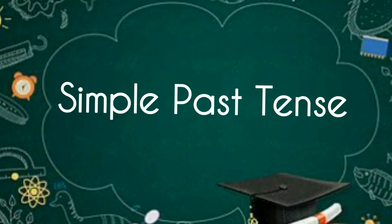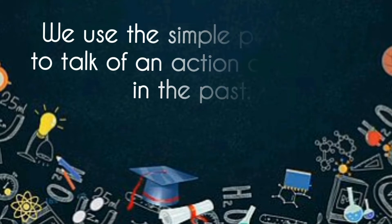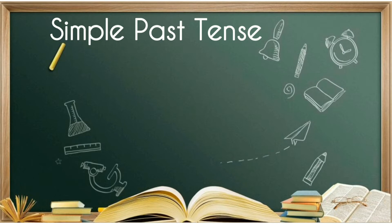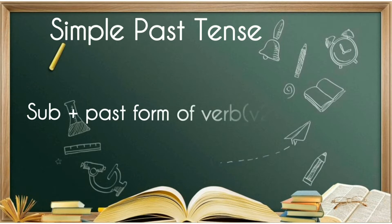Simple past tense. We use the simple past tense to talk about an action completed in the past. The format of simple past tense is: subject plus the past form of the verb — that is, the second form of the verb (V2).